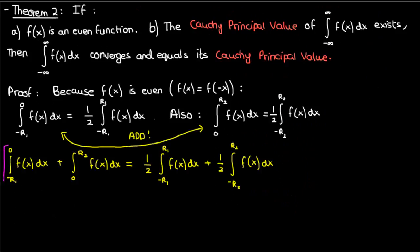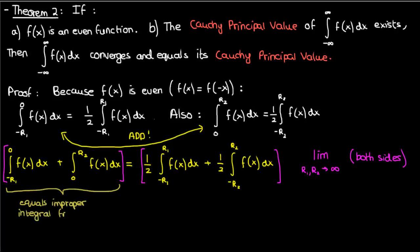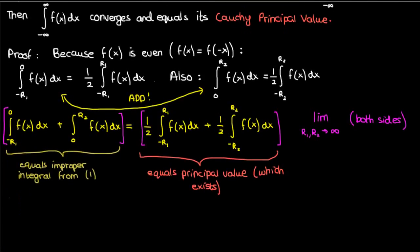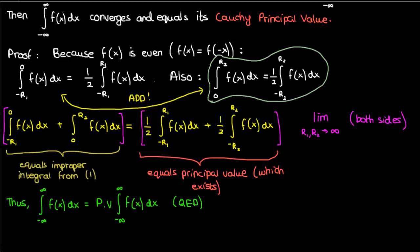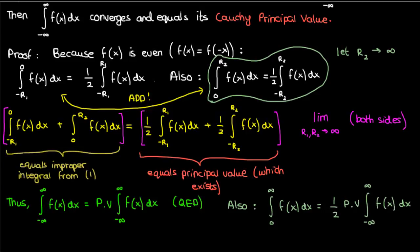Now when we add these two equations, if we take the limit of both sides as R1 and R2 approach infinity, we find that the left-hand side matches the definition of the improper integral in equation one, while the right-hand side equals two halves of the principal value added together. Since we know that the principal value exists from the assumption of the proof, the left-hand side — the improper integral — must also exist. We can conclude that the improper integral equals the principal value when f of x is even. Also, taking the second equation only and letting R2 approach infinity, the improper integral over a semi-infinite interval of an even function equals half the principal value, if the principal value exists. I'll call these equation 3 and equation 4.